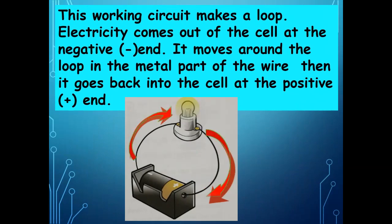This working circuit makes a loop. Electricity comes out of the cell at the negative end and moves around the loop in the metal part of the wire, then goes back into the cell at the positive end. The electricity is coming from the negative side of the cell and going back to the positive side.